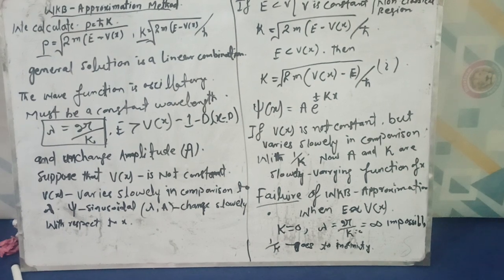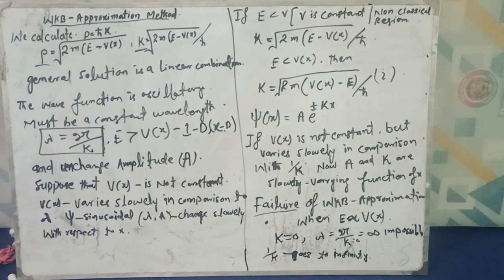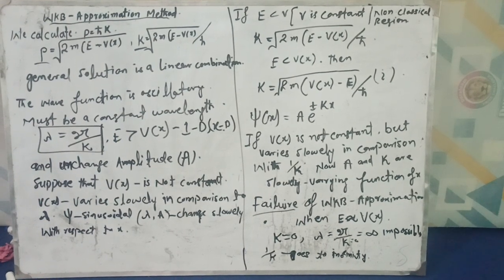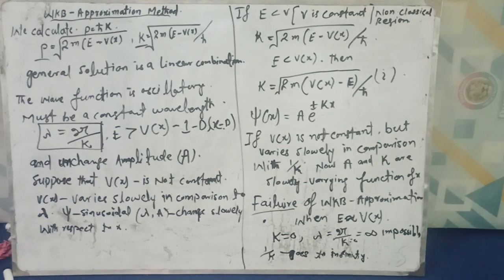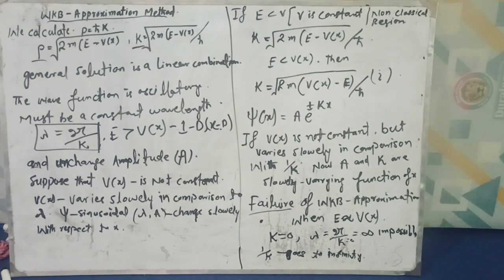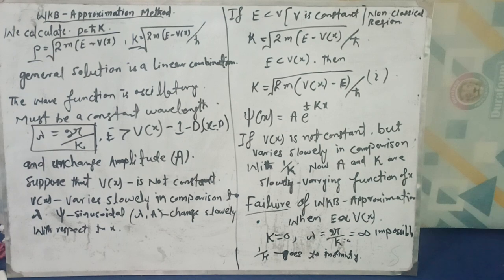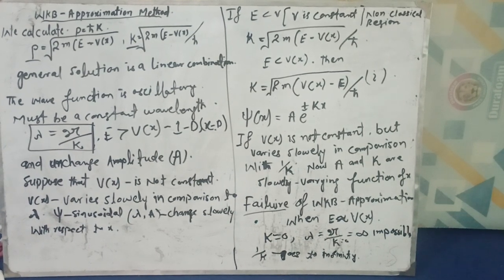The WKB approximation method fails at one point: the turning point, or we call it the failure point of WKB approximation method, if the energy of the particle is nearly equal to the potential of the system.